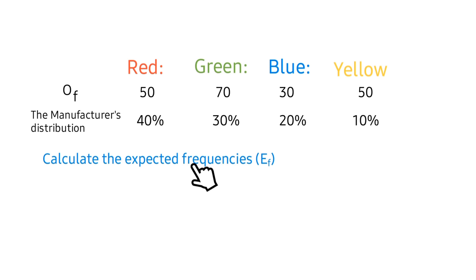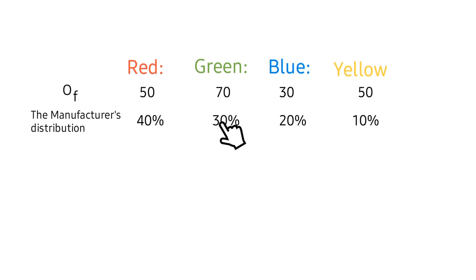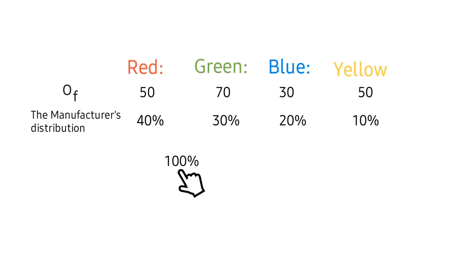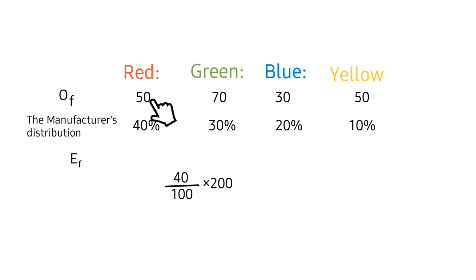Next is to calculate the expected frequencies. We start with color red. First, we add all the manufacturer's distributions: 40% + 30% + 20% + 10% = 100%. So the expected frequency for red is 40 divided by 100, times 200 — since the bag contains 200 candies — which gives 80.